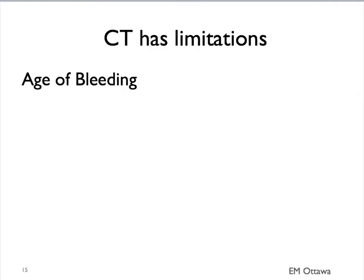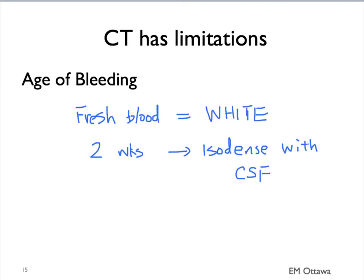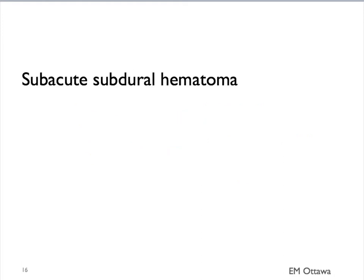Even though CT is the first investigation in patients with potential intracranial bleed, it has its limitations. It is related to the age of bleeding and the amount of bleeding. Fresh blood is bright white on CT scan. However, as it ages, the blood will become less and less white, and eventually become isodense as CSF at around 2 weeks' time. That makes the diagnosis more difficult, and this phenomenon is often seen in patients with subacute subdural hematoma.